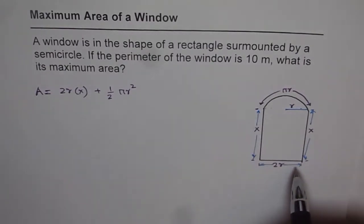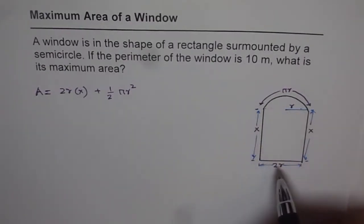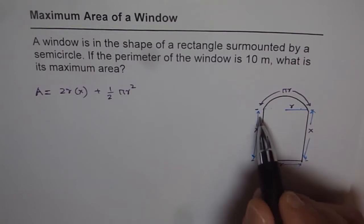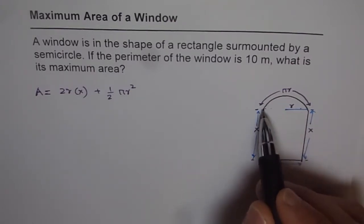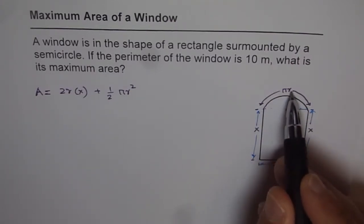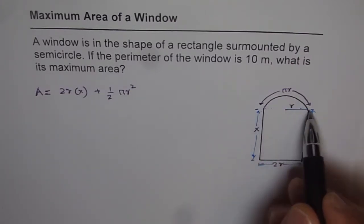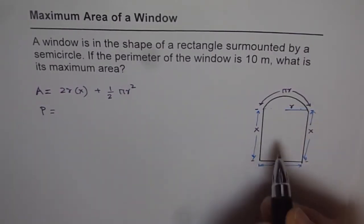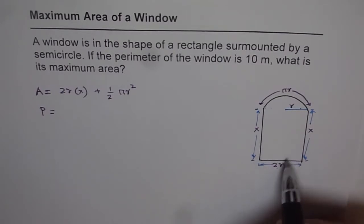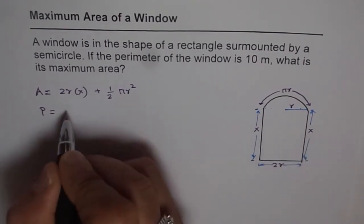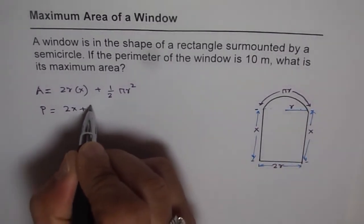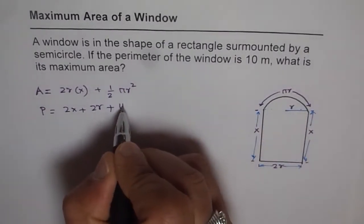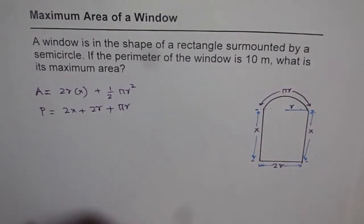The perimeter is 10 meters. The perimeter is the sum of all sides plus the curved part of the semicircle, which is π r (half of 2π r). Therefore, we can write: perimeter P = x + 2r + x, that is, 2x + 2r + π r.